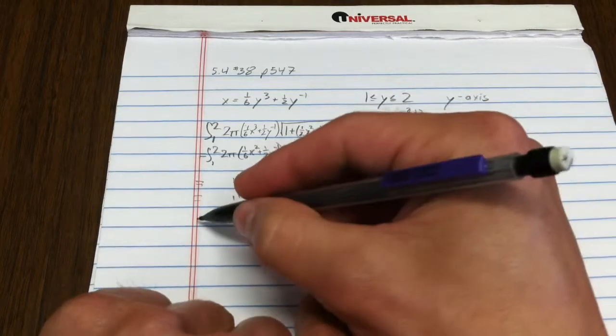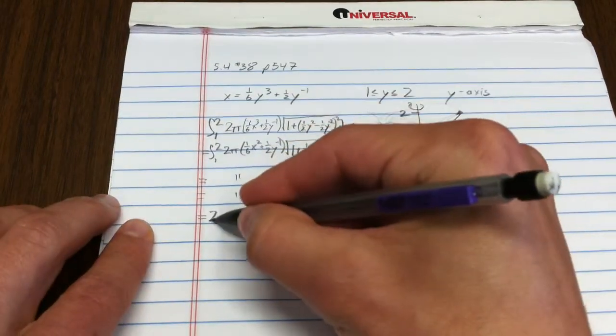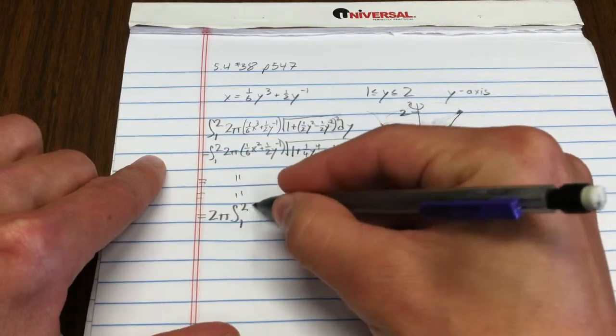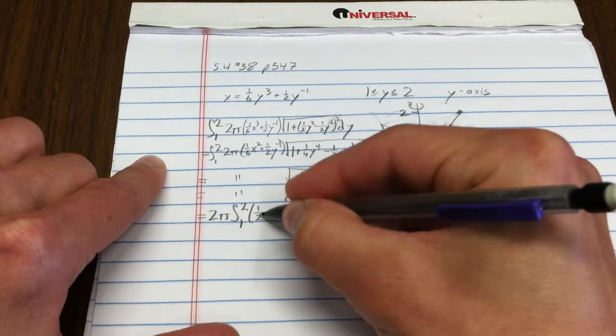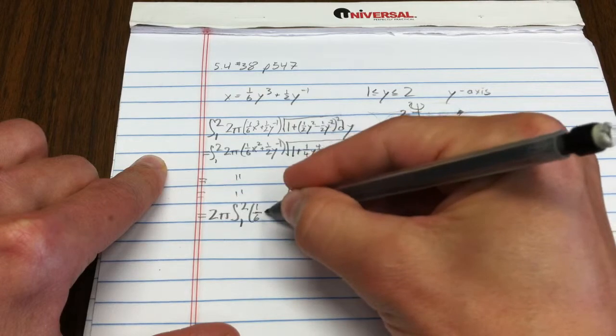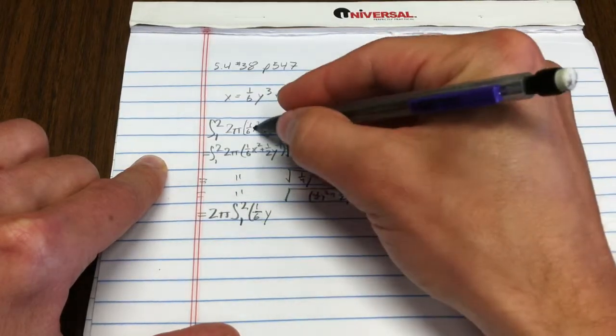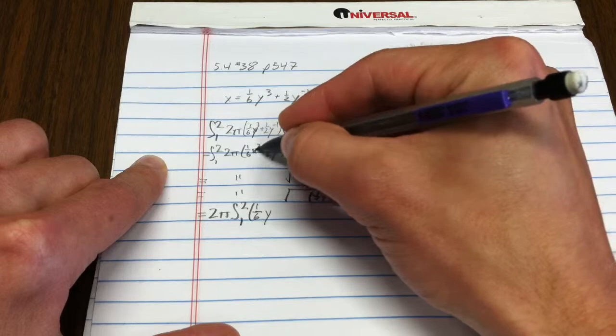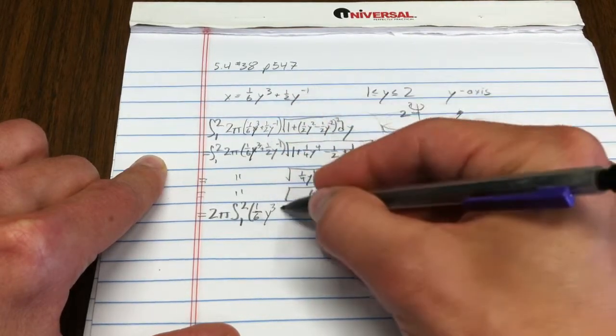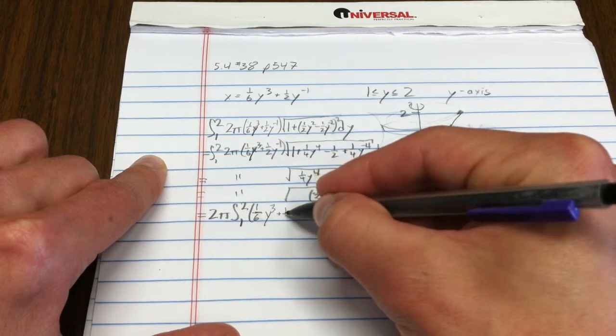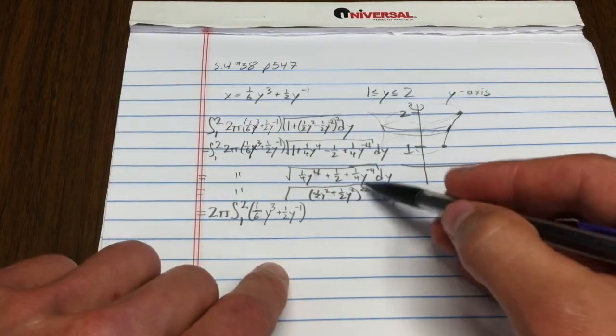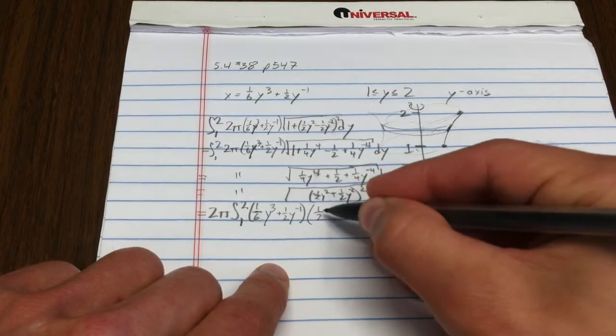Now my last line is going to sort of put that all together. I'll re-include it here: one-sixth y—this should be a y all the way through, of course—y to the third, y to the third, plus one-half y to the negative one. And then since I have this squared and square root, the beauty of this is that those cancel.